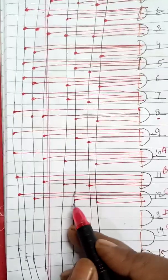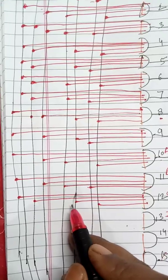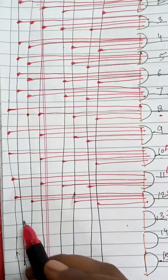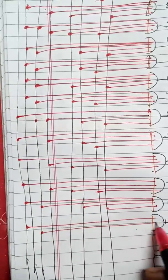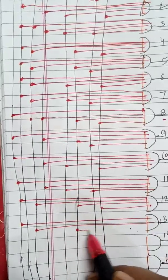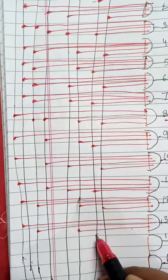Then for 13, which means D, the binary is 1101. So 1, 1, 0, then 1.